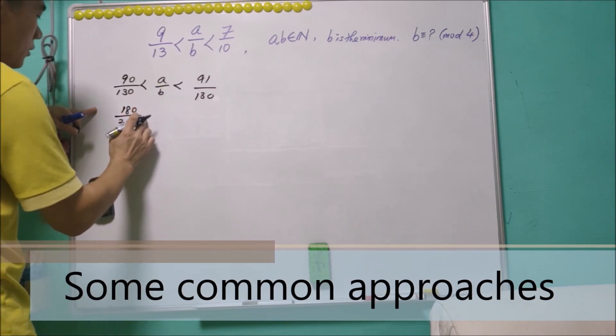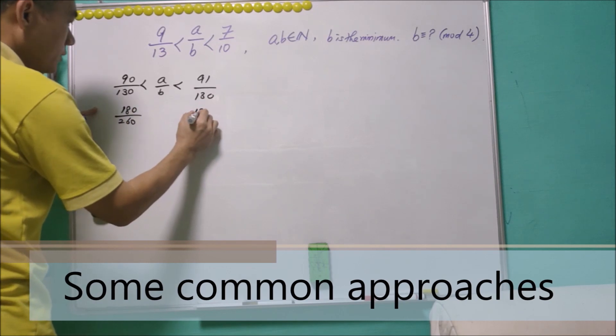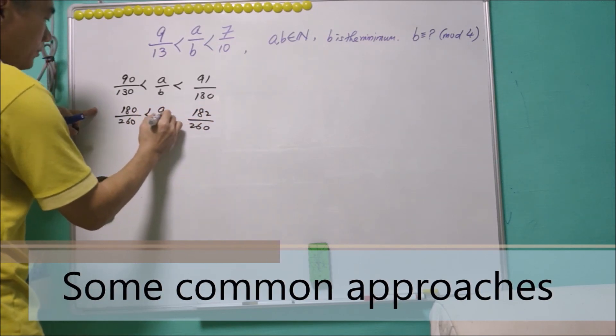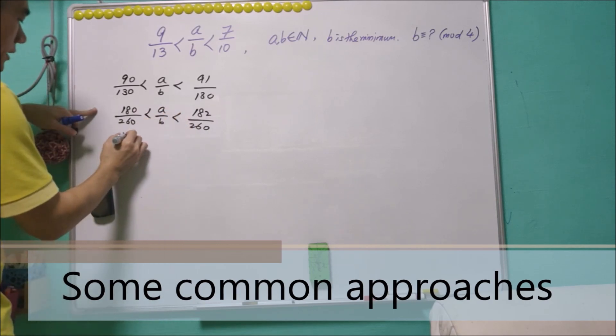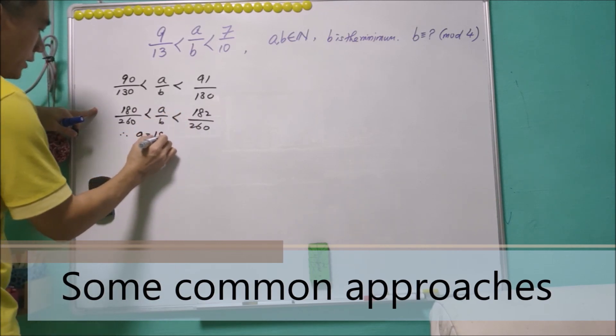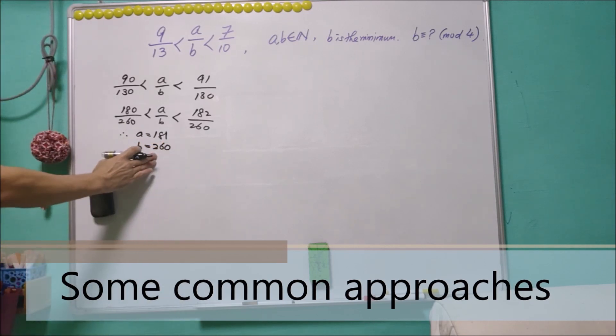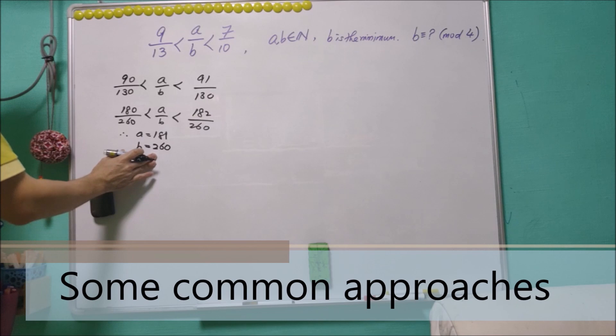And they have to multiply with 2, so this is 180/260, this is 182/260. And they claim that a equals 181 and b equals 260, and therefore b is a multiple of 4.